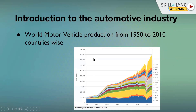This graph shows how vehicle productions have been growing from 1950 to 2010. It shows production data per country — USA, Canada, Japan, France, and others. As you can see, production dramatically increased during this period, going into millions of vehicles, which shows the huge scope of the automotive industry.